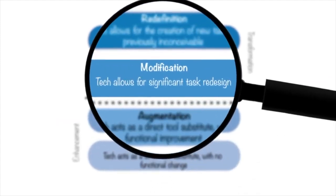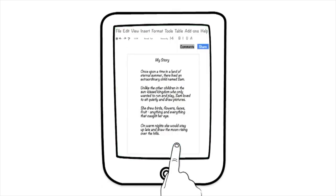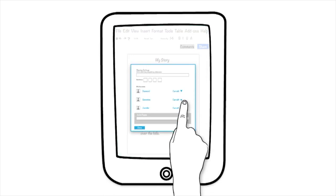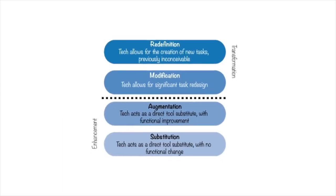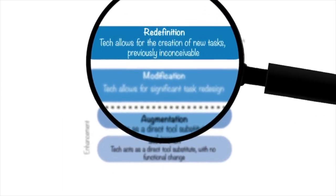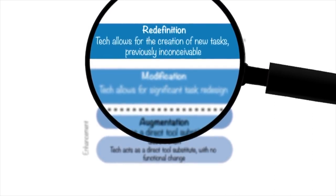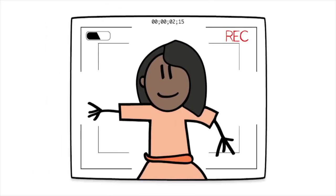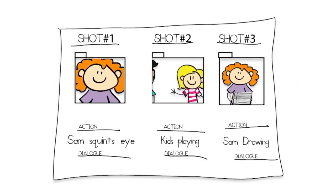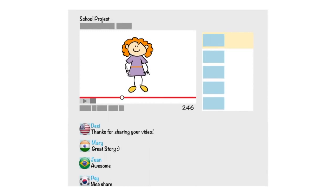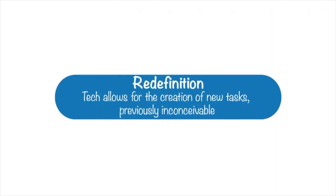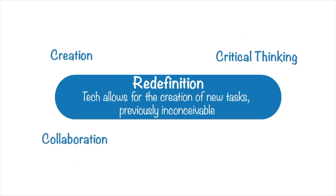In modification, technology should allow for significant task redesign. Take the same creative writing assignment and have students use Google Docs to write their stories. Students can then share these stories with peers and provide real-time feedback. Technology has significantly modified the original task by introducing the benefits of student collaboration. At the top stage, redefinition, technology allows for the creation of entirely new tasks that were previously inconceivable. What if students transform their written stories into multimedia productions? After creating storyboards, students film scenes, edit clips, and add music. They can publish the videos and receive feedback from voices across the globe. Technology redefines the story writing task to include media creation, critical thinking, collaboration, and communication.